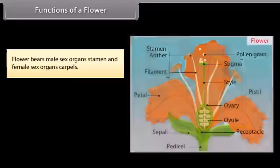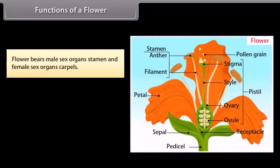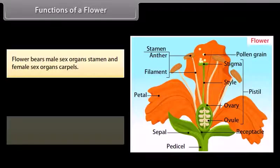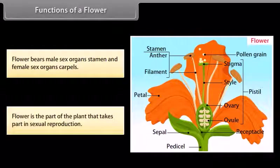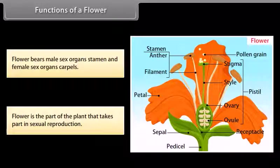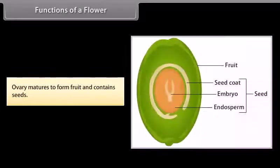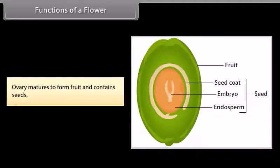Functions of a flower: A flower bears male sex organs (stamens) and female sex organs (carpels). The flower is the part of the plant that takes part in sexual reproduction. The ovary matures to form the fruit and contains seeds.